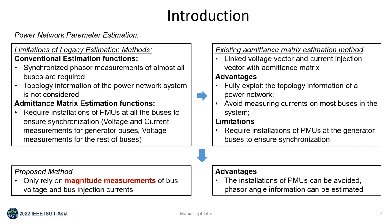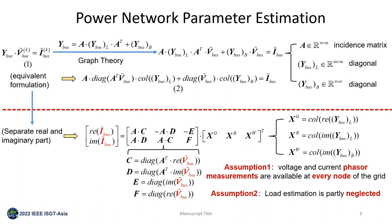Here I will show you the modeling of the existing power network parameter estimation method. Consider an n-bus power network system. The voltage phasors and current injection phasors can be related through an Admittance Matrix Y-bus, as shown in the left equation 1. Note that the vector i and vector v are all measurements, and only the matrix Y is the parameters. Since i is the current injection vector, it means that if the i-th bus is connected to a power source, then the i-th entry of i is non-zero; otherwise, the entry of i is zero. From graph theory, the Admittance Matrix can be separated into three parts, which are the incidence matrix and two diagonal matrices respectively. Based on this equation, we can obtain one equivalent formulation shown below, after separating the real and imaginary parts.